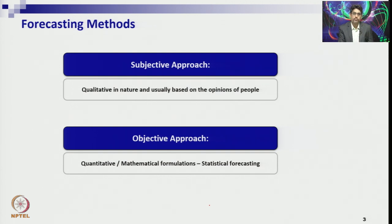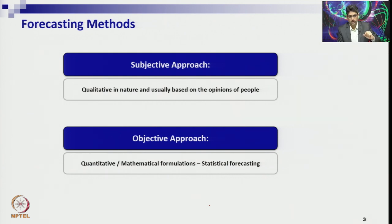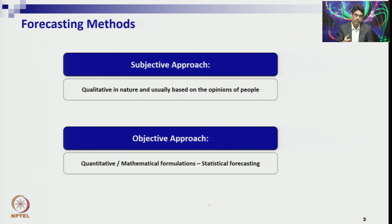In the subjective category of forecasting methods, we follow qualitative aspects such as market research, consumer surveys, jury of experts opinion, Delphi method, panel of experts, and group decision-making. These are called the subjective approach, where we don't focus much on quantitative forecasting. The objective approach, which is more popular in forecasting, uses different quantitative methods.